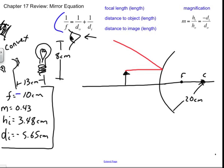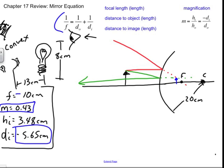Let's verify with a ray diagram. C is at 20 cm behind the mirror and F is at negative 10 cm. The object is at 13 cm. Drawing the rays — parallel in, out as if through the focal; in toward the focal, out parallel — the image forms behind the mirror: smaller, upright, and closer than 10 cm to the mirror. Our answer of 5.65 cm is indeed less than 10, which is correct — a convex mirror always produces a virtual image inside the focal point. The positive height confirms it's upright, and smaller than the original 8 cm.